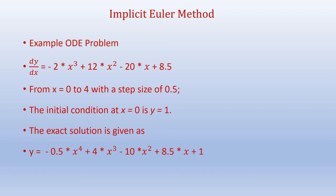We will now solve the same problem we solved using the explicit Euler method, but using the implicit Euler method. So dy over dx is given as shown. We need to integrate this equation to solve for y, and x ranges from 0 to 4. We will use a step size of 0.5. The initial condition is when x equals 0, y equals 1, and the exact solution is given below.